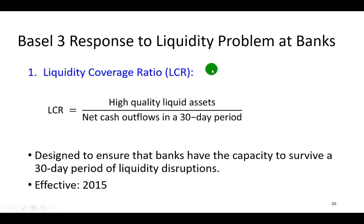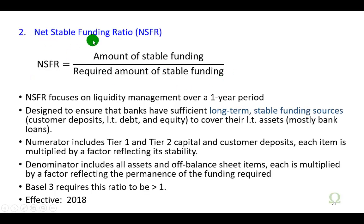Basel III, as part of its recommendations following the 2008 financial crisis, recommends two important liquidity ratios as a way to monitor and measure banks' liquidity problems. The first is the liquidity coverage ratio, and the second is the net stable funding ratio.